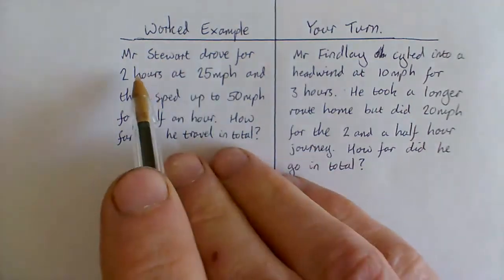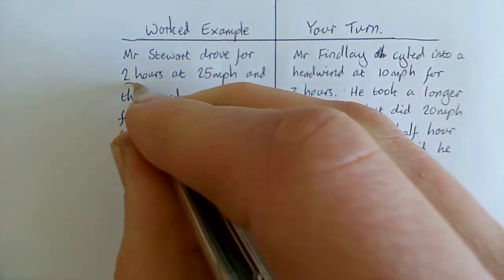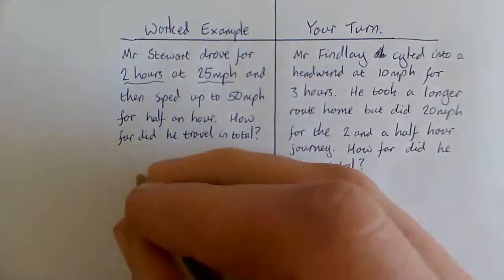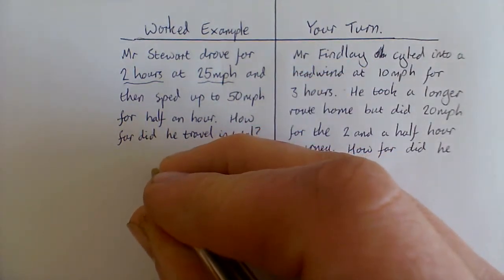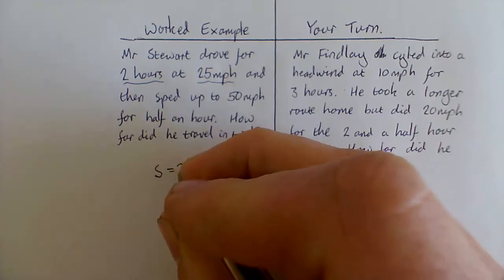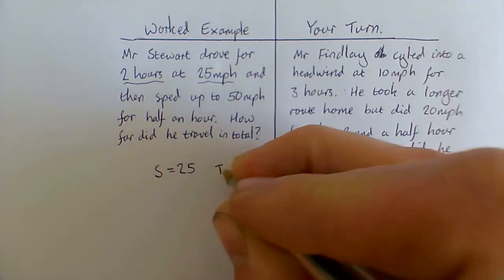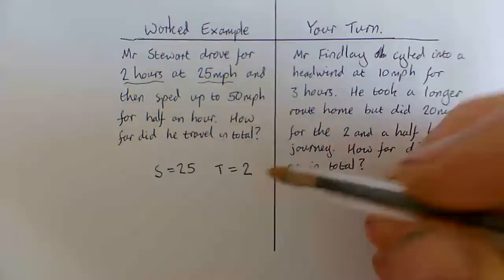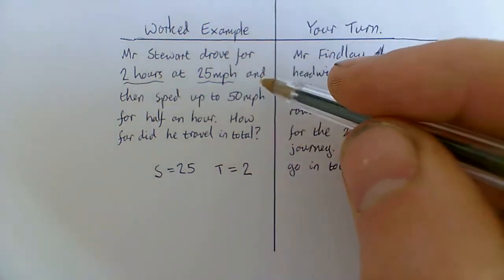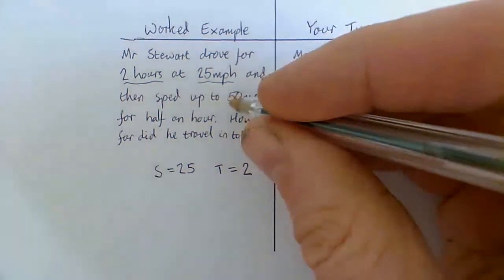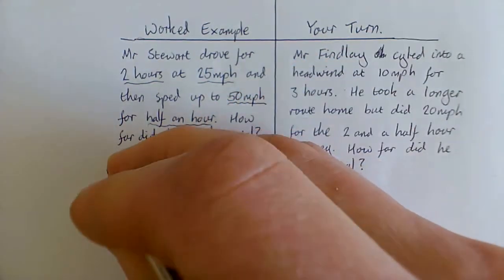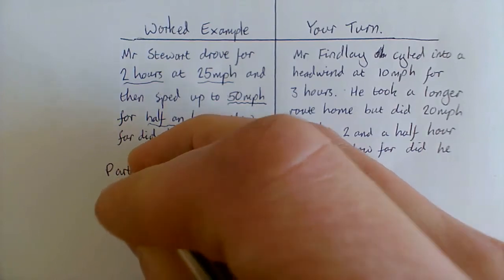Mr. Stuart drove for two hours, so we've got time, at 25 miles an hour, so we've got speed. So our first thing we've got is S equals 25, T equals 2. Okay, that's our first piece of information, but we've got more information. And then sped up to 50 miles per hour for half an hour. So we're going to label this, this is part one of our journey.